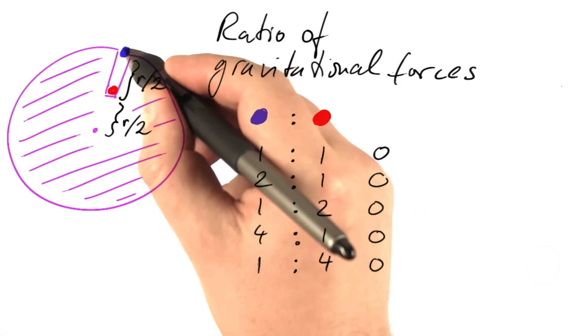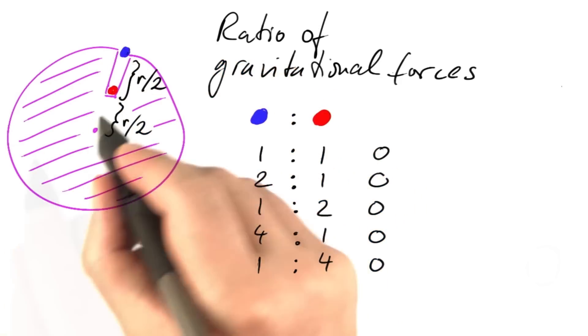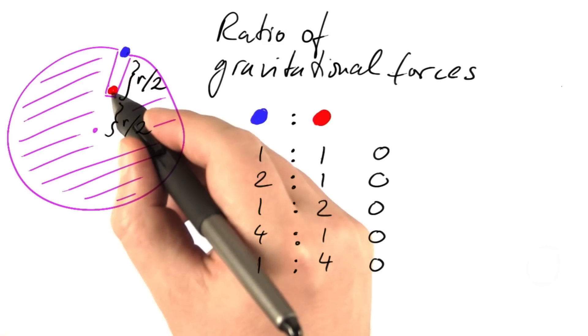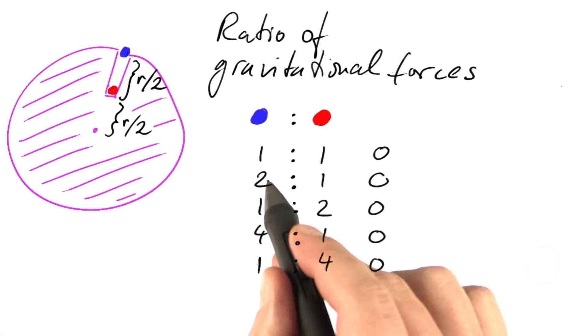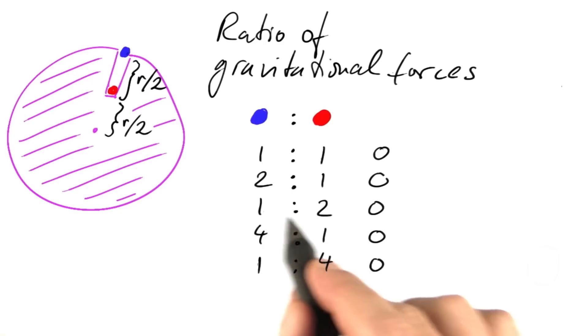What's the ratio of the force of gravity in the blue position to the force of gravity in the red position? Are these two forces equal? Do we have twice the force at the surface or do we have twice the force at the inner point? Or is it four times on the outside or four times at this inner position?